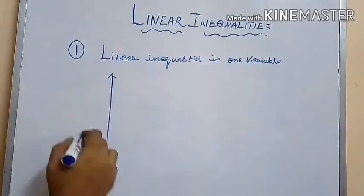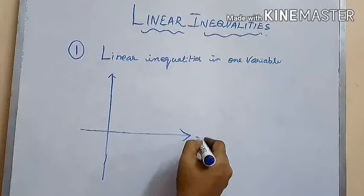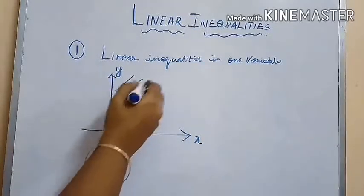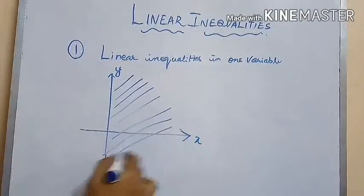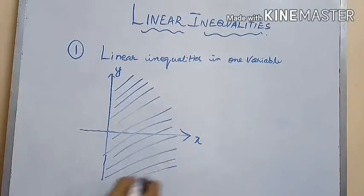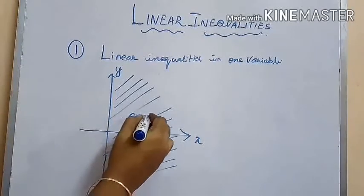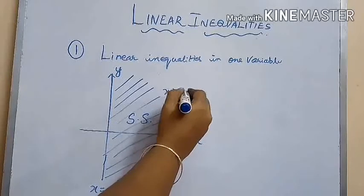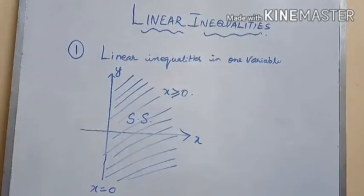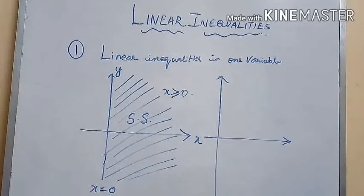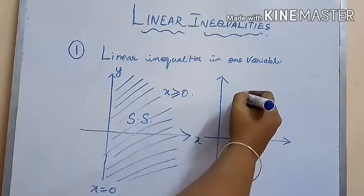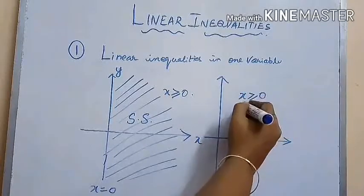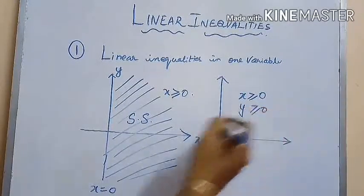Let us learn how to mark the solution space for linear inequalities in one variable. The solution space for the inequality X greater than or equal to zero is shown here. In another graph, we are going to find the solution space for the inequalities X greater than or equal to zero and Y greater than or equal to zero.